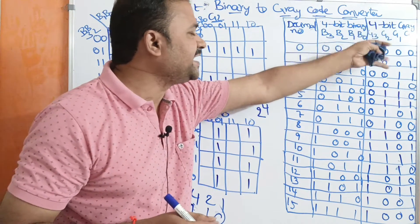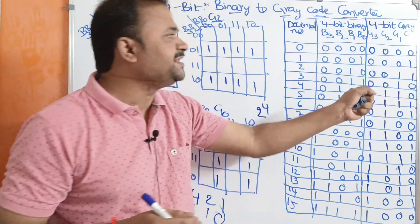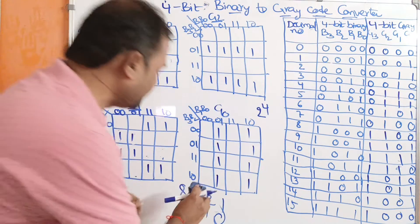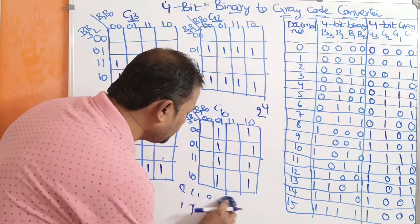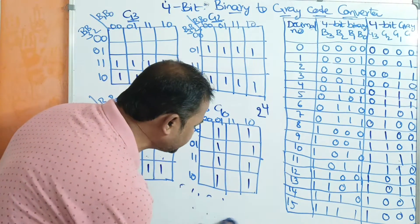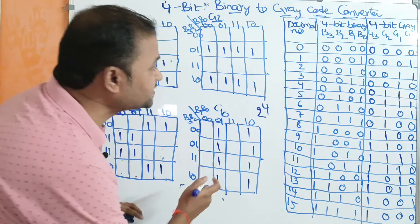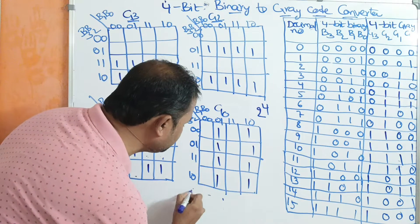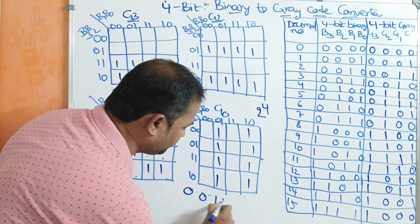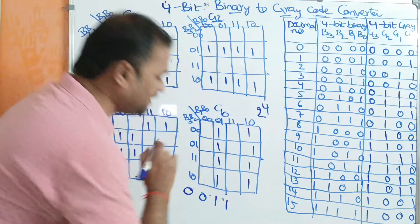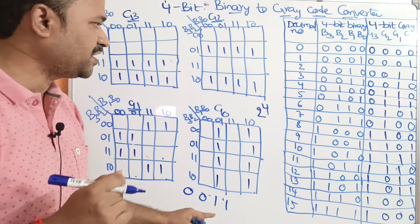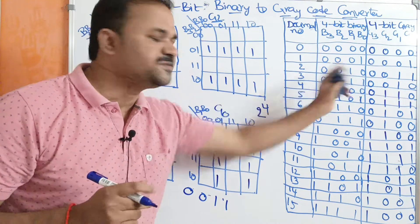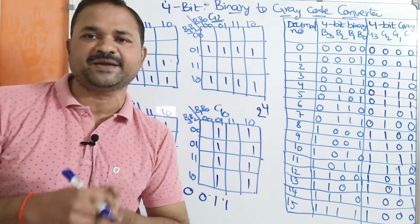Now let us see how we can obtain the gray code for the corresponding binary number. Let the number be 0011, which is nothing but decimal 3 in binary.